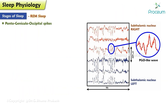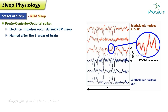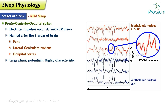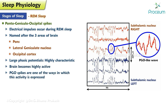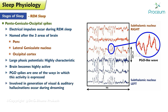Ponto-geniculo-occipital (PGO) spikes are electrical impulses that occur during REM sleep. They are named after the three areas of the brain where they are most prominent: the pons, the lateral geniculate nucleus, and the occipital cortex. These large phasic potentials are highly characteristic of REM sleep. The brain becomes highly active during REM sleep, and PGO spikes are one of the ways this activity is expressed. They are believed to be involved in the generation of visual and auditory hallucinations during dreaming and may also play a role in memory consolidation and learning.